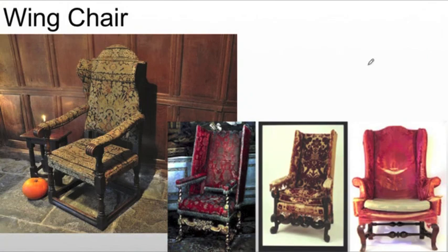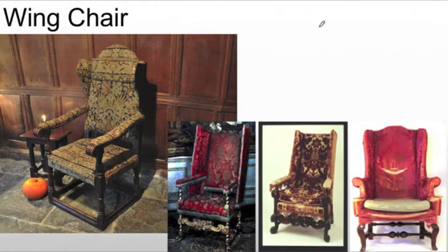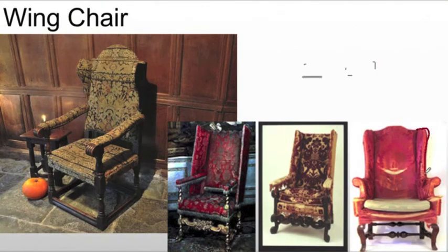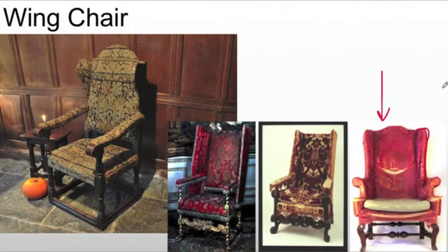We'll also see the wing chair, which is growing out of some of the Jacobean forms we saw in England during the Renaissance. The idea is that the chair becomes more and more enclosed. This is fantastic in Baroque construction because there are always drafts. You would put this in front of the fire — the fire gives off its heat into the chair, and these wings block any draft from beside you. The arms slowly enclose over time, giving us that classic wingback chair we are so used to today, coming primarily from the Baroque.